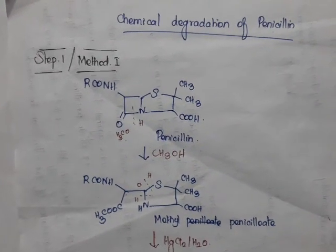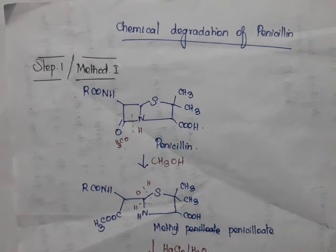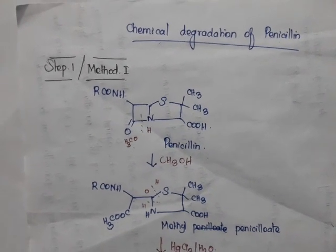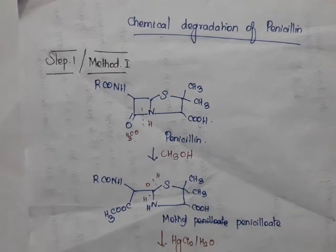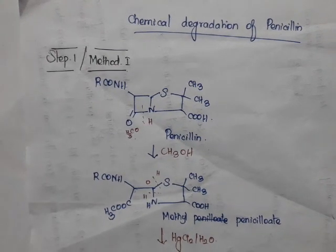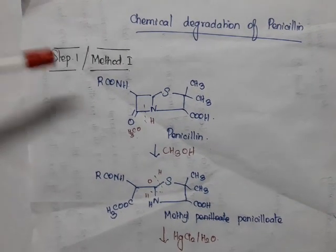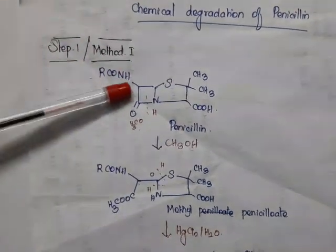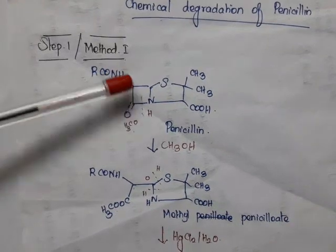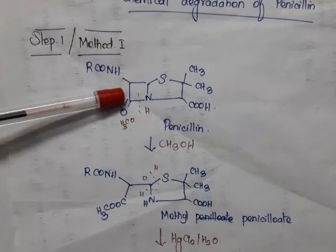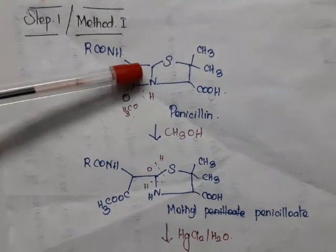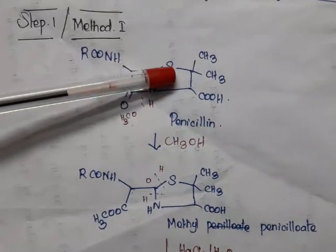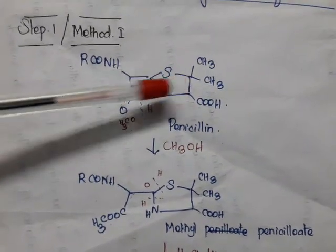Today we will see degradation of penicillin. There are 5 methods for degradation of penicillin. We will see method 1. We have known the structure of penicillin — it contains a beta-lactam nucleus fused with the thiazolidine ring.